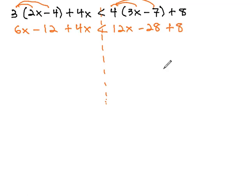We then must combine like terms on each side to simplify further. We get 10x minus 12 on the left side, and on the right side, we get 12x minus 20.